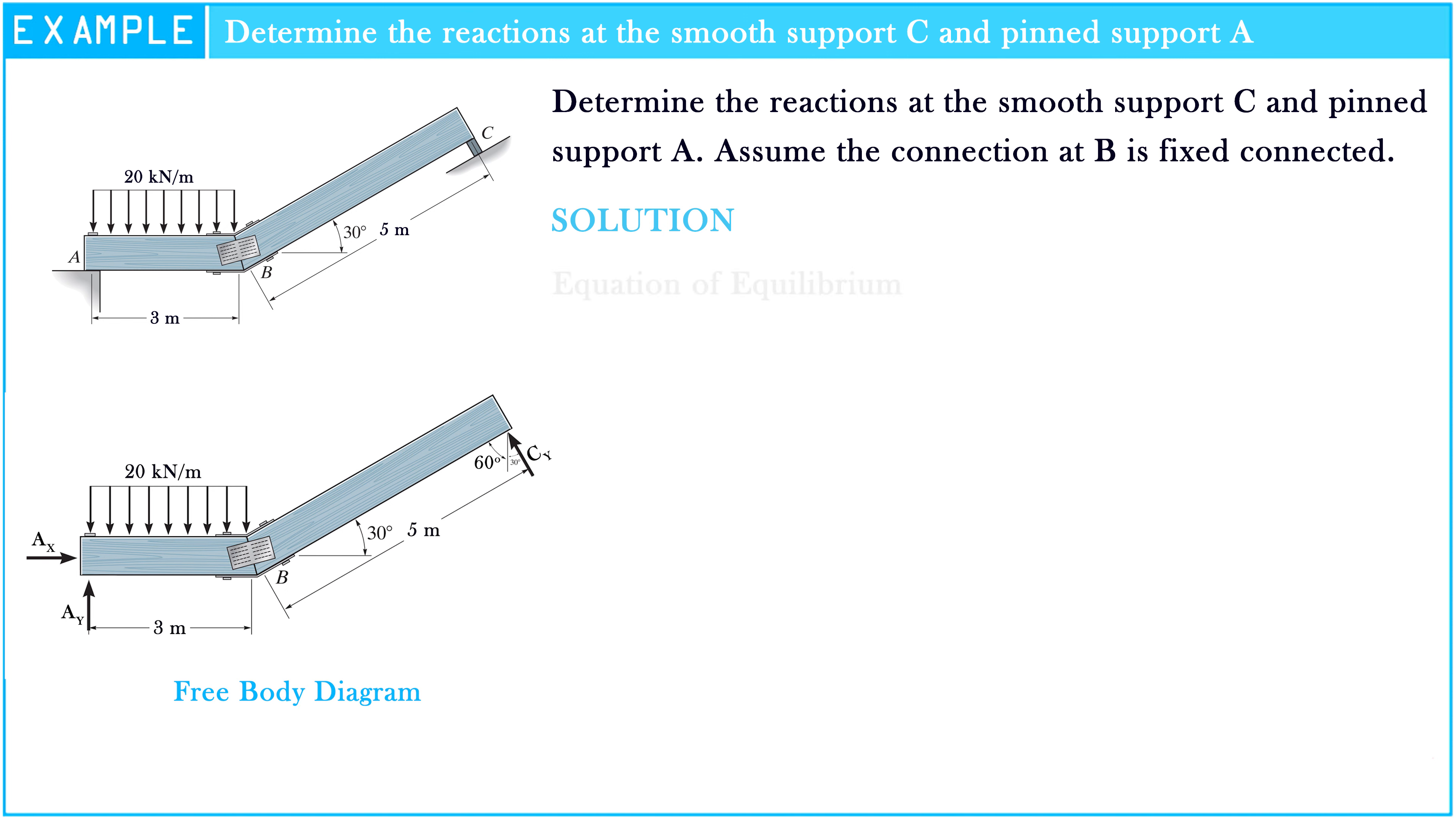Now let's apply the equations directly by writing the moment equation of equilibrium about A, B, and C respectively. The sum of moments at point A equals zero. So 20 kN per meter multiplied by 3 meters, multiplied by 3 meters divided by 2, minus CY multiplied by 5 meters multiplied by sin 60 degrees, equals zero.